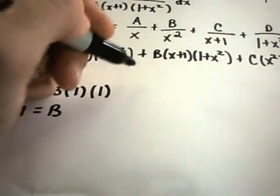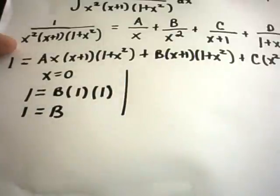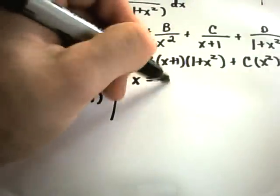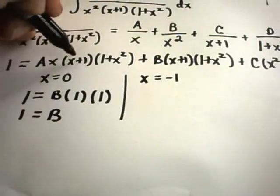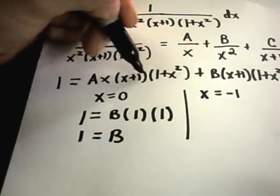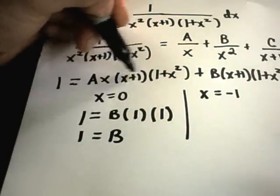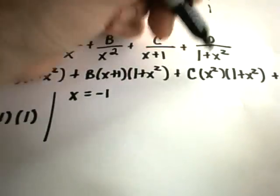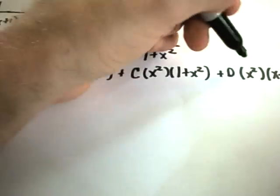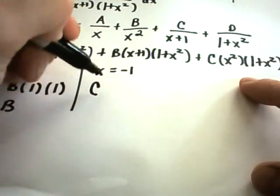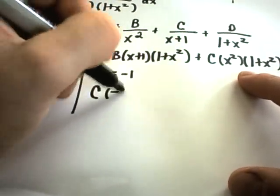Next, we pick another clever value of x. The only other value that will work to get things to cancel is negative 1. Notice if we plug in negative 1, the a term cancels because of the x plus 1 factor, the b term also cancels, and the d term cancels as well. So we'll get c times negative 1 squared.